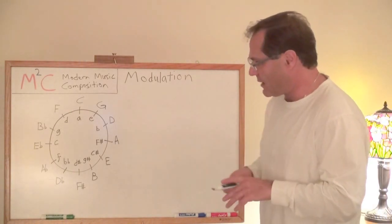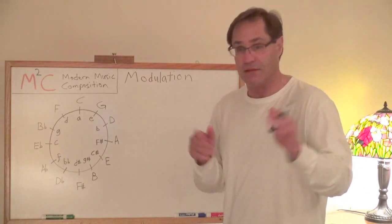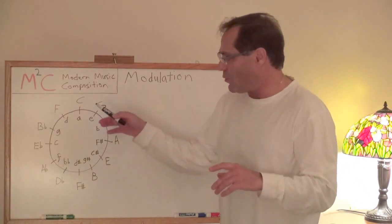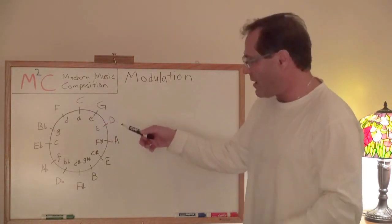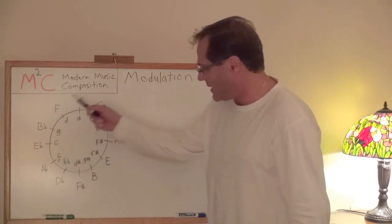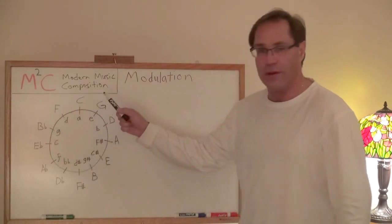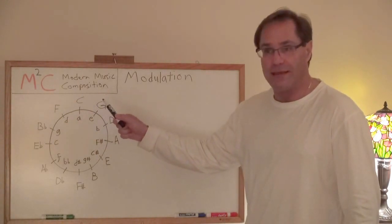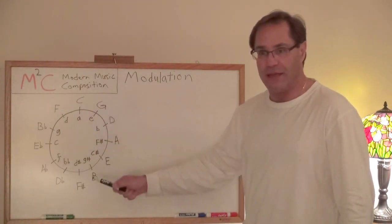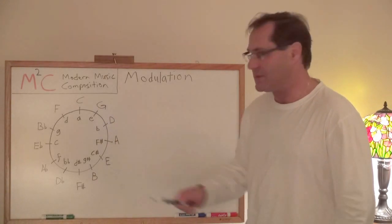I've got my handy-dandy friend here, the circle of fifths. The reason why I put it up here is because you can be in any one of these major chords, for example, and know exactly which key you're going to be modulating into just by looking at its polar opposite.